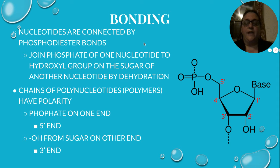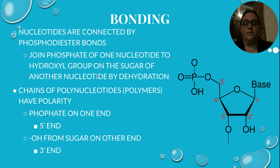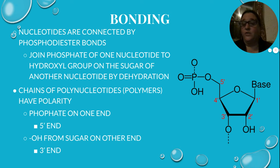When nucleotides are connected together, they're connected through things called phosphodiester bonds. These are bonds between the phosphate and the sugar — so it's the phosphate of one nucleotide with the sugar of the other. The phosphate of one nucleotide is joined to the hydroxyl group on the sugar of another nucleotide. Because we're joining two things together, we're going to use dehydration synthesis, pulling out a water — we take an H off of one and an OH off of the other. When we get a long chain of many nucleotides, that's when we can call it DNA or RNA, or nucleic acid.